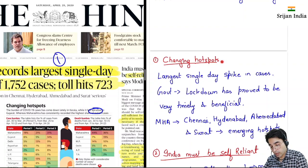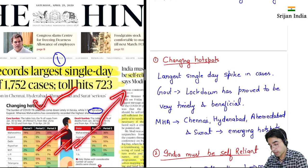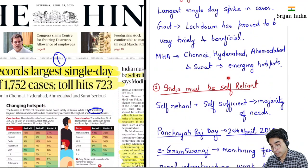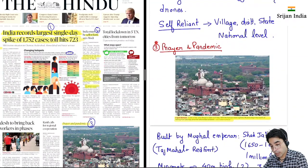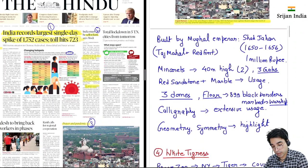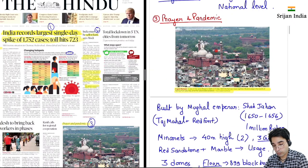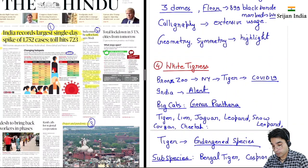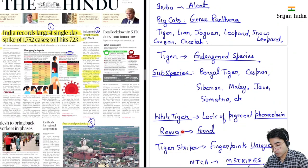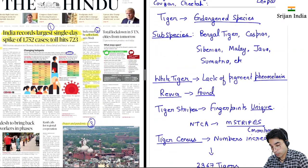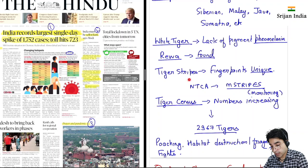Jho first news item hai, that is changing hotspots. Hotspots change ho rahi hai jaise jaise COVID-19 ka yeh progress ho rahi hai India mein. Then India must be self-reliant — yeh Prime Minister ne kaha hai. Then prayer and pandemic — ismein hum Jama Masjid ke baare mein padenge. Then white tiger — tiger ki species kya hoti hai, big cats kya hoti hai, subspecies kya hoti hai, COVID-19 ka kise attack hua hai, NTCA.